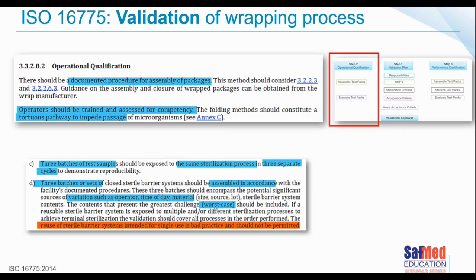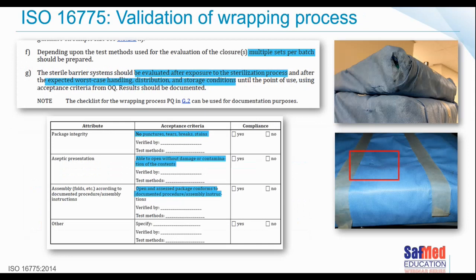The standard states that the reuse of sterile barrier systems intended for single use is bad practice and should not be permitted — there's no difference between reusing a single-use filter and a single-use sterile barrier system. Remember that sterile barrier systems should be evaluated after exposure to the sterilization process and after expected worst case handling, distribution and storage scenarios. If you're doing that process correctly, I should not see a set on the shelf with drops of water on it or torn wrap.